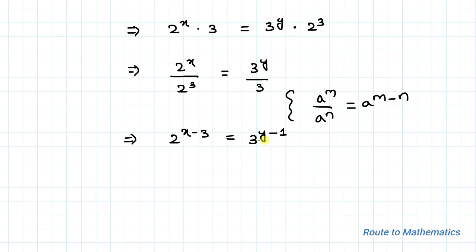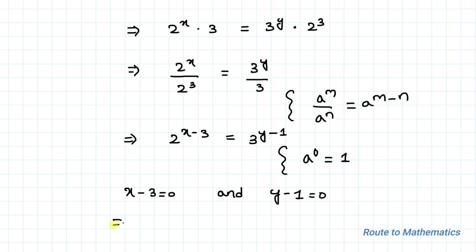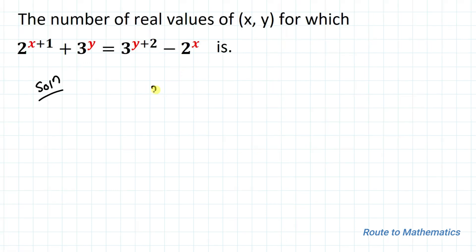We have 2 to the power (x minus 3) equals 3 to the power (y minus 1). As you can see, both sides of the equation have different bases. In order to satisfy the equation, the powers must both equal zero, since any base to the power 0 is 1. So x minus 3 equals 0, giving x equals 3, and y minus 1 equals 0, giving y equals 1. We get one and only solution (x, y) = (3, 1), so the number of real values of x and y is exactly one.